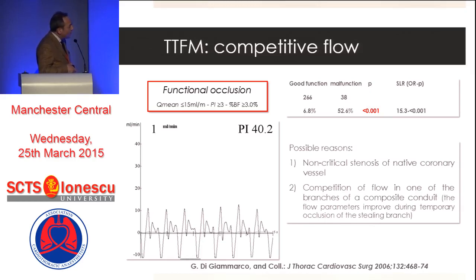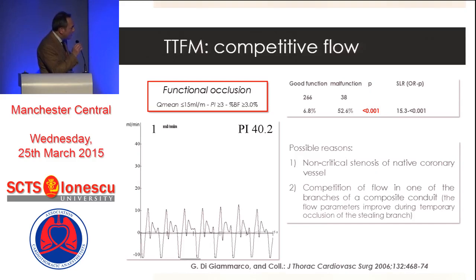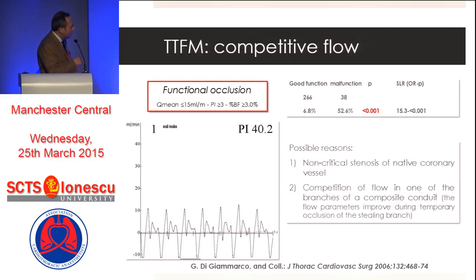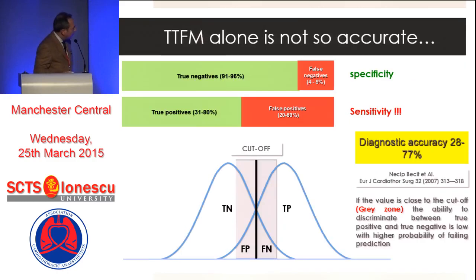Functional occlusion may also be caused by competition of flow between two branches of a Y conduit — for example, with an anterior conduit — and this is probably one of the issues to discuss when considering total arterial revascularization using both mammary arteries.